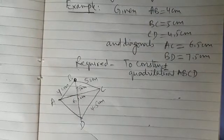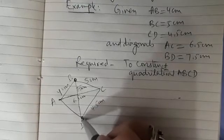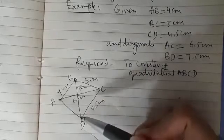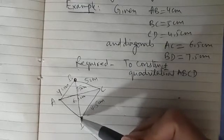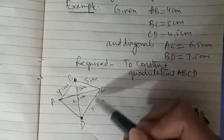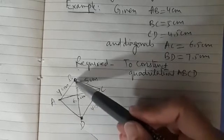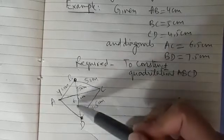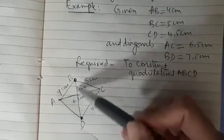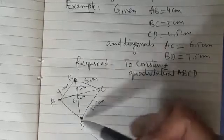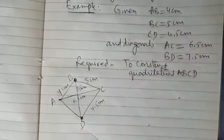Now after this we will see how we can reach to this vertex D of quadrilateral. So for getting the point D we can use this length CD and one of the diagonal that is length BD, that is 7.5 cm. So we will be using all this for the construction.